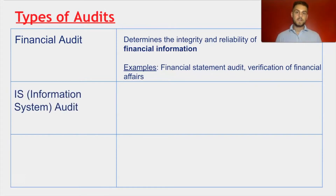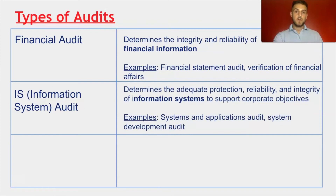The next type of audit is an IS audit, also known as information system audit. An information systems audit determines the adequate protection, reliability, and integrity of information systems to support corporate objectives. Examples include system and application audit and system development audit.